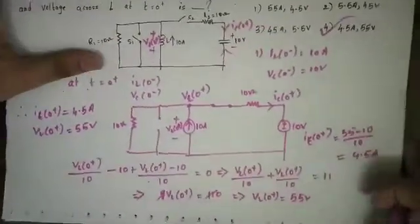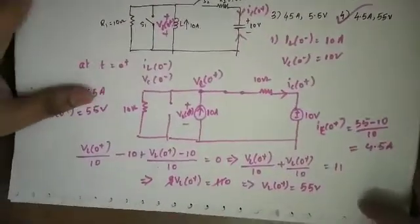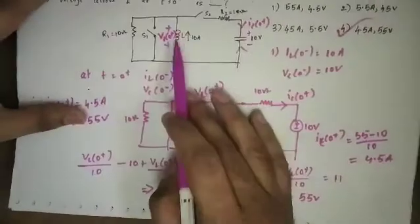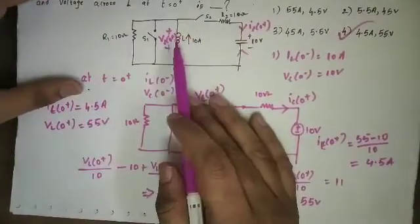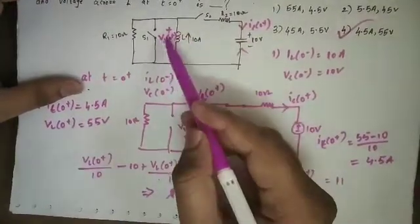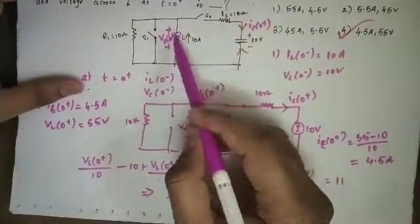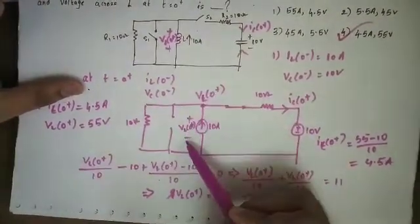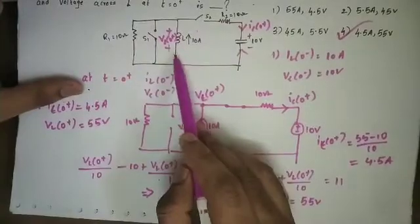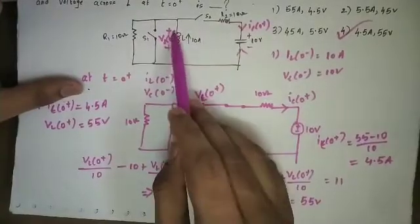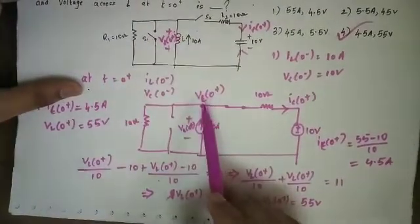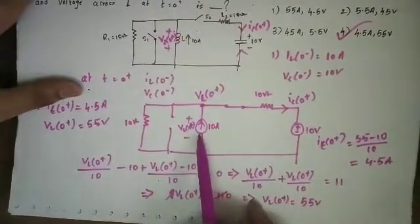Now we need to talk about polarities. I can consider the current direction in the inductor: plus R first means plus equals minus. So I can consider this polarity assignment.